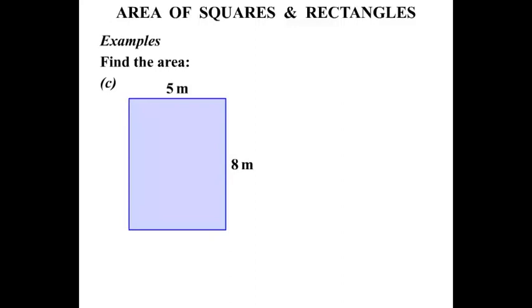The next one, find the area. A equals LB. So length and breadth. The length is 8 m, the breadth is 5 m. We multiply them together, and 8 times 5 is 40. And the units? Square meters.